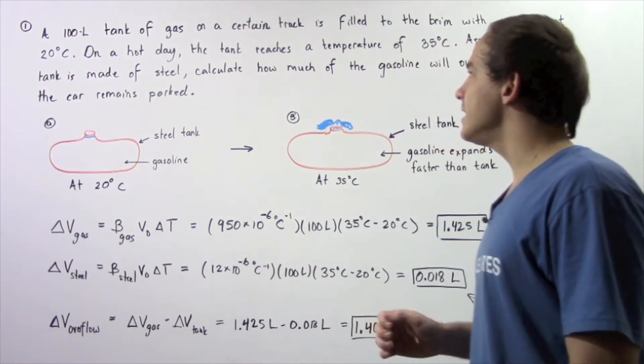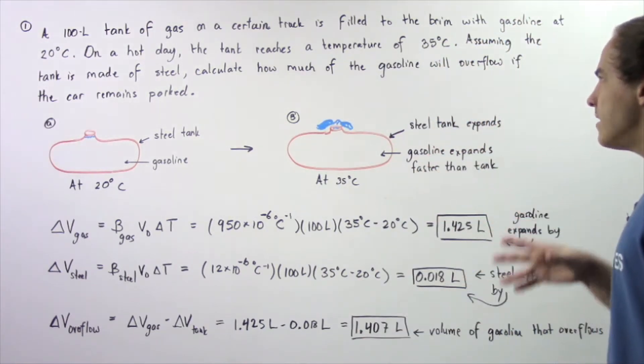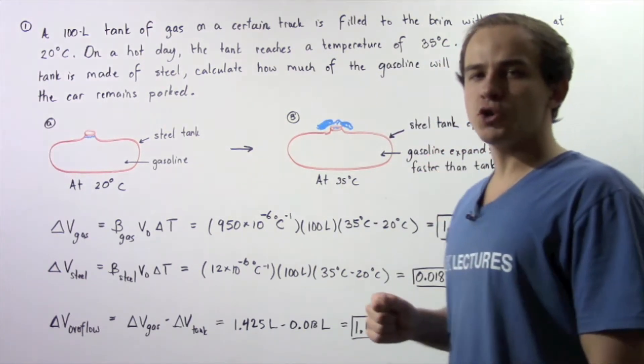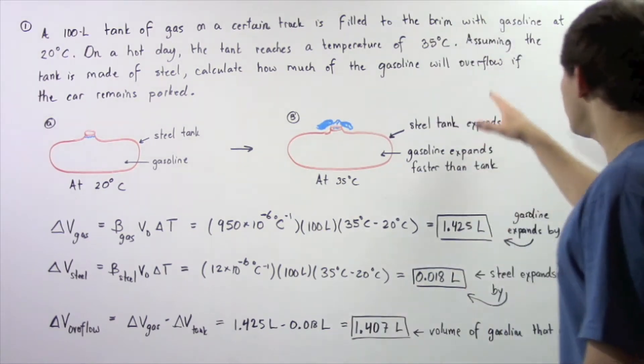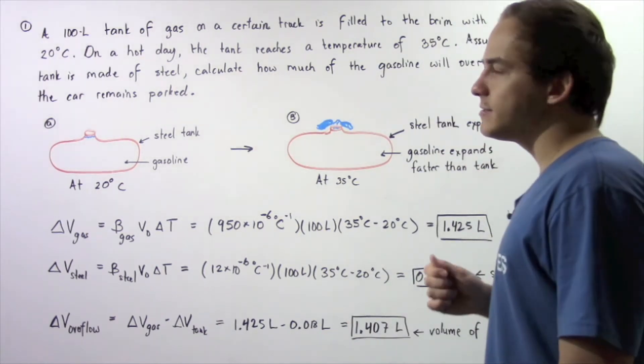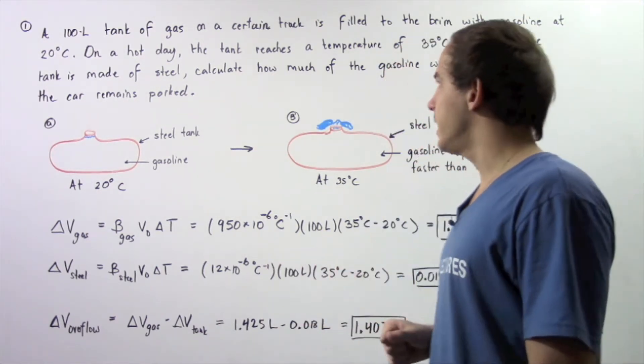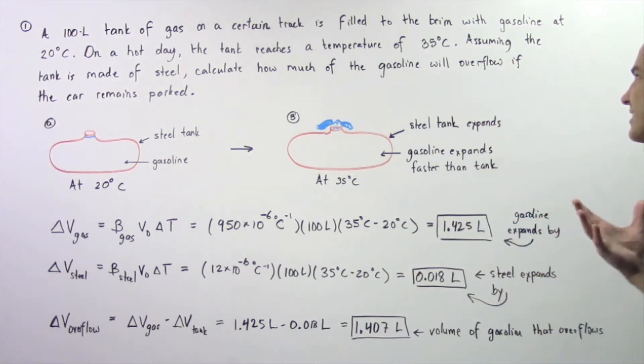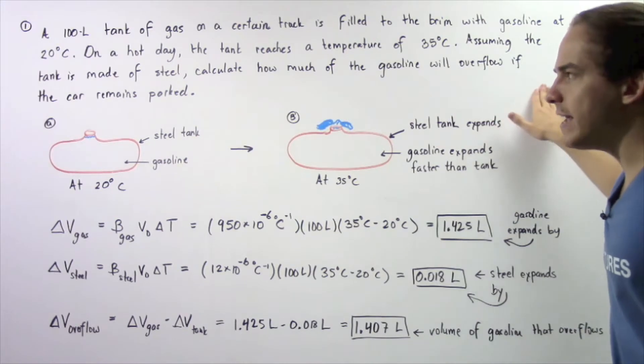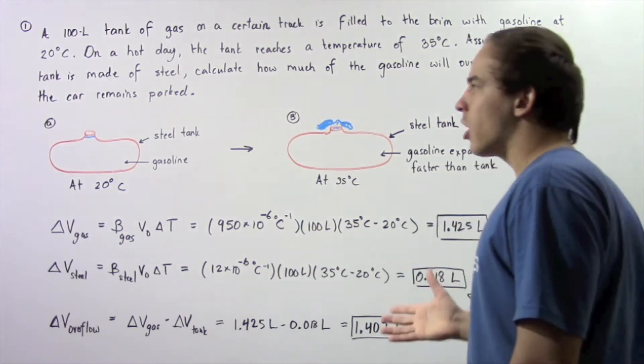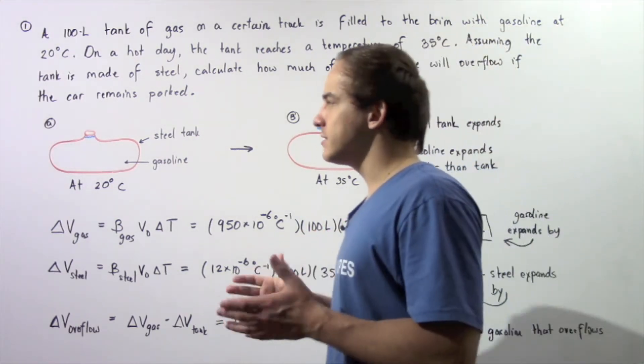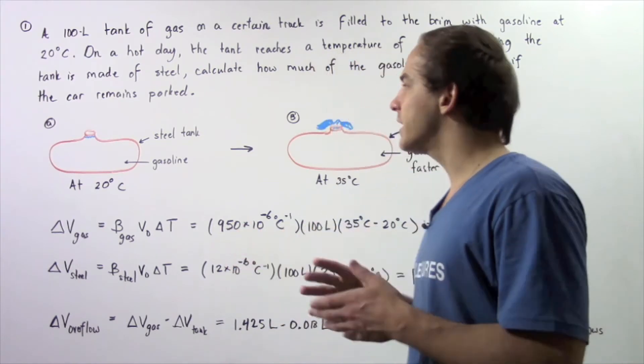On a very hot day, the tank reaches a temperature of 35 degrees Celsius. Assuming the tank is made of steel, calculate how much of the gasoline, in terms of volume, will overflow if the car remains parked. That is, the car doesn't actually spend any of the gas.